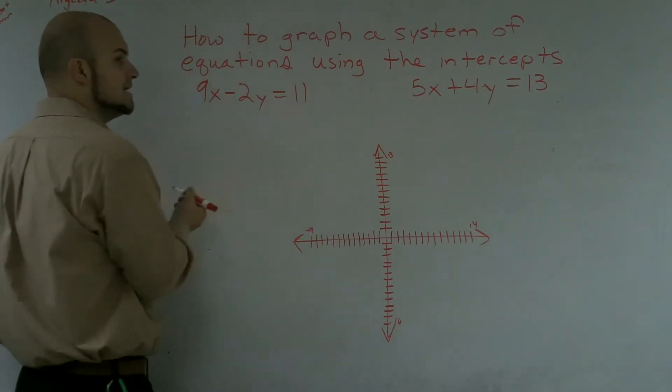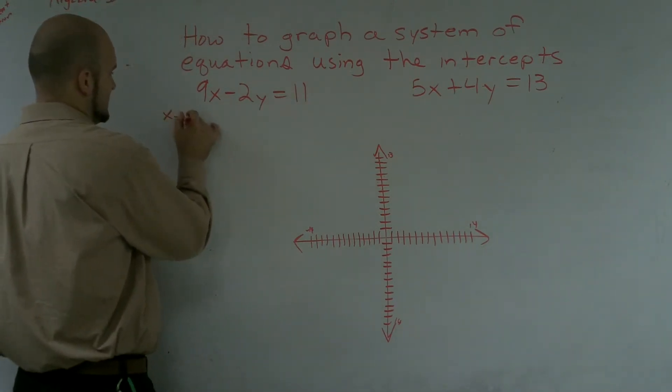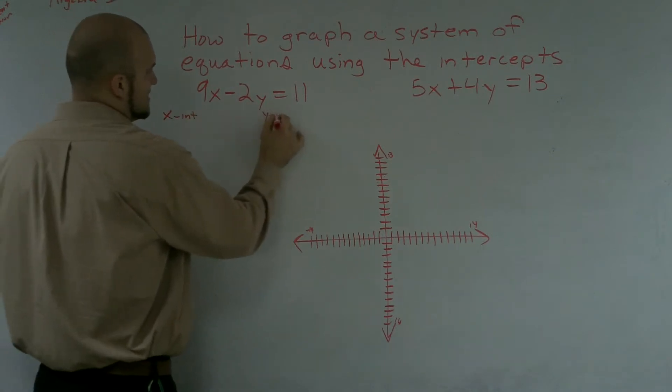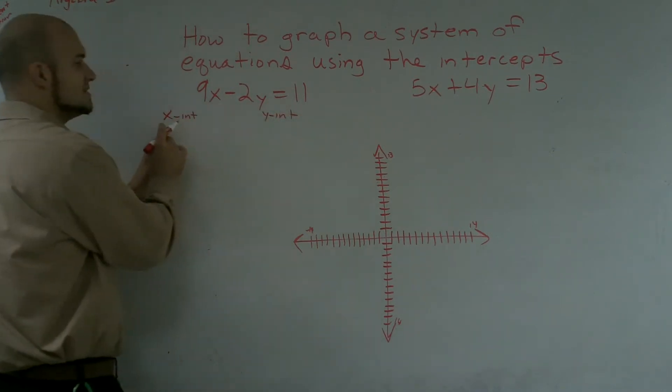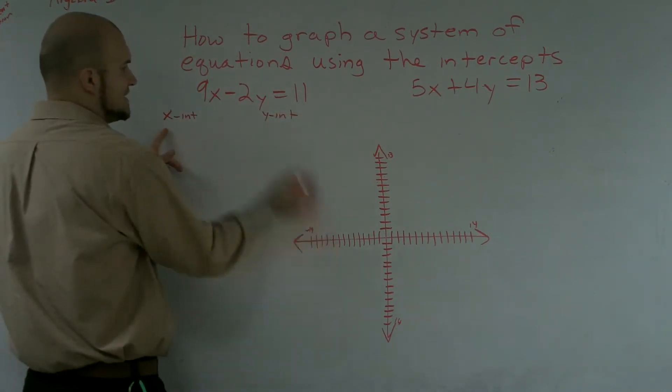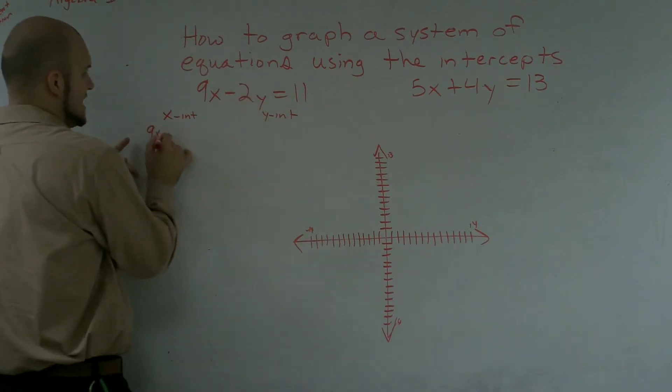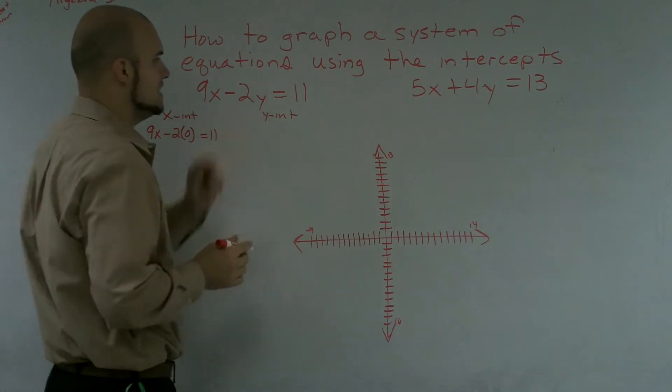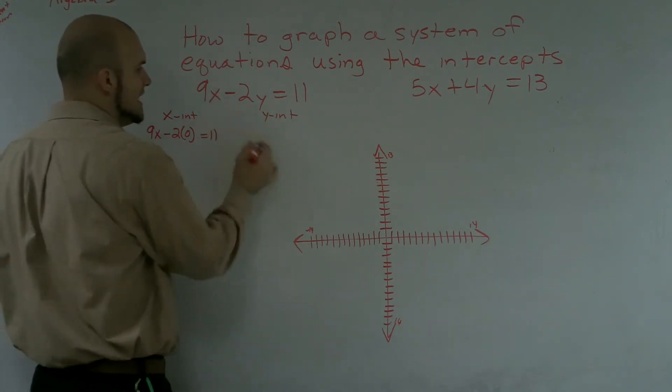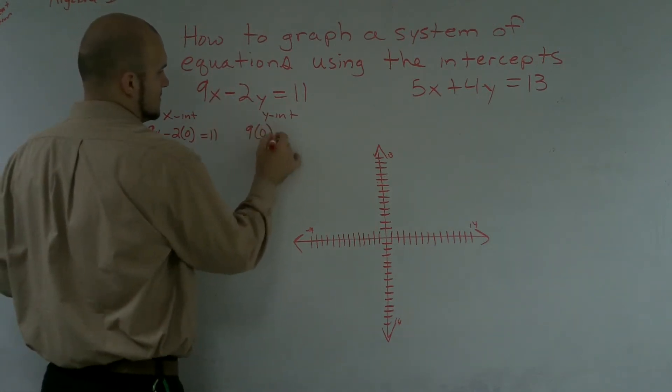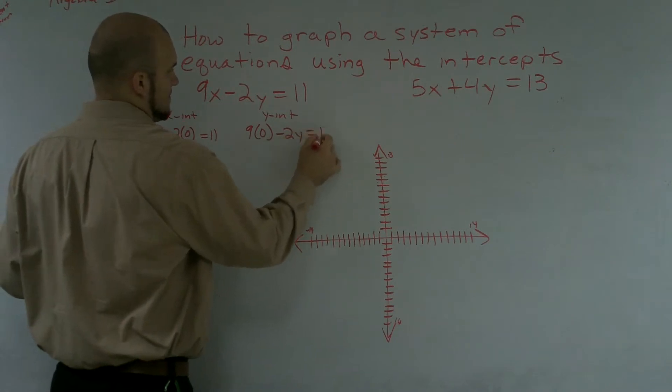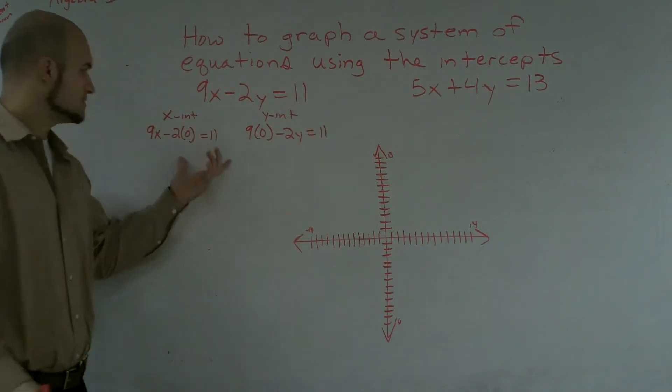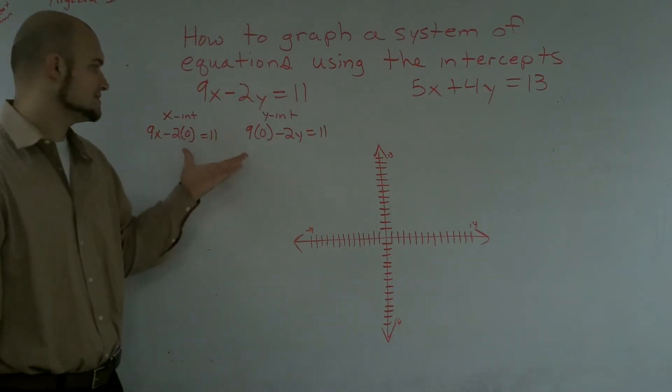So if I want to use the intercepts, I'm going to have to solve for my x-intercept and my y-intercept. To solve for the x-intercept, we know that when there's x-intercepts, our y equals 0. So I'll say 9x minus 2 times 0 equals 11. And then when I solve for my y-intercept, I know that x is going to equal 0. So therefore, that's how you're going to solve those two intercepts.